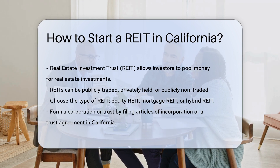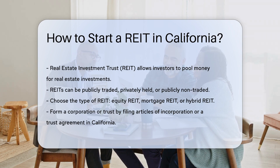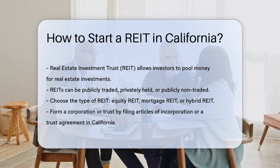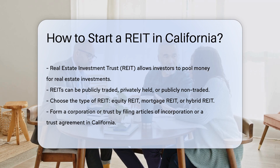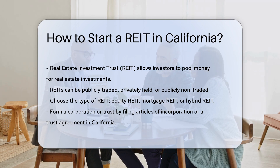REITs can be publicly traded, privately held, or publicly non-traded. To start a REIT in California, you must first choose the type of REIT you wish to form. The three main types are equity REITs, mortgage REITs, and hybrid REITs.